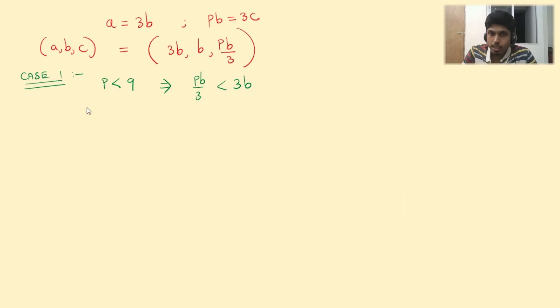So hopping on with that condition, we get 3b to be less than b plus pb by 3. Remember, this is both necessary and sufficient for the existence of triangles with these sides. So this shall imply pb by 3 is greater than 2b implying p must be greater than 6. So what are the possible values for this case? p equal to 7 and 8.